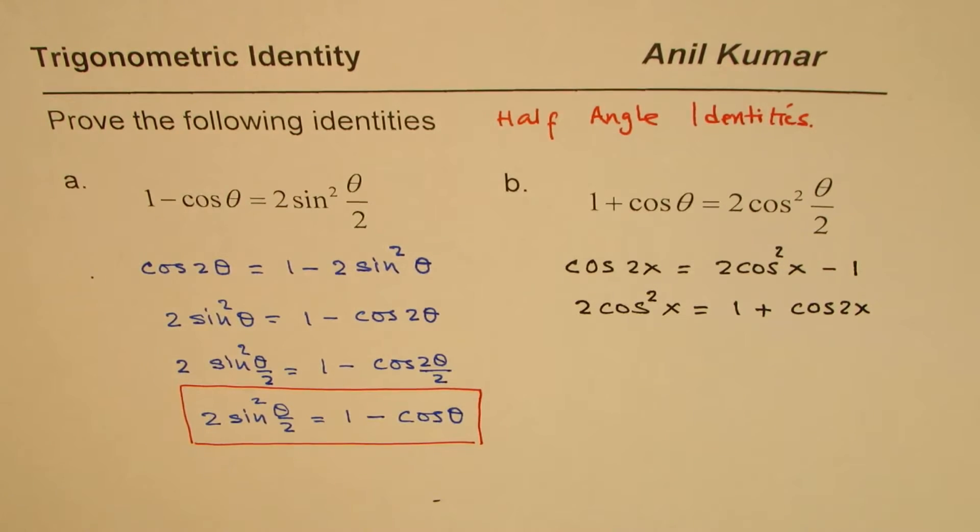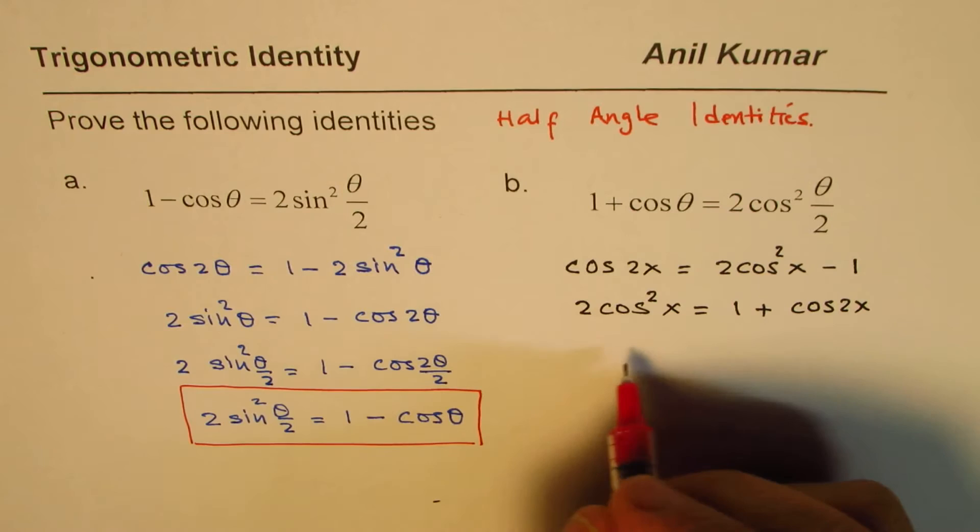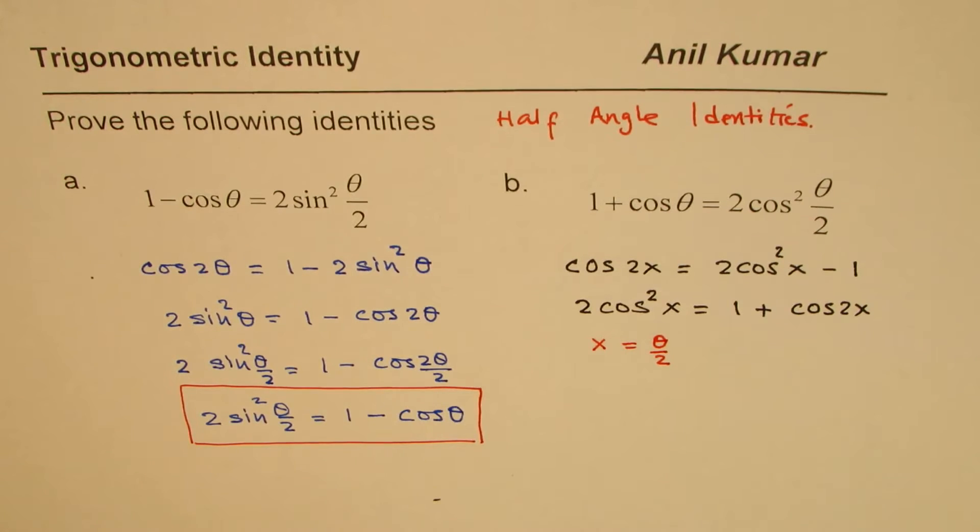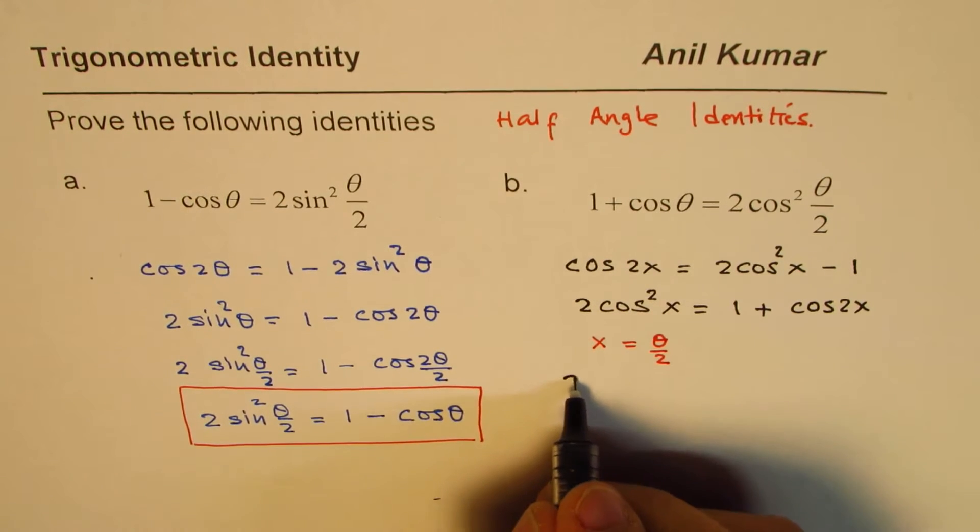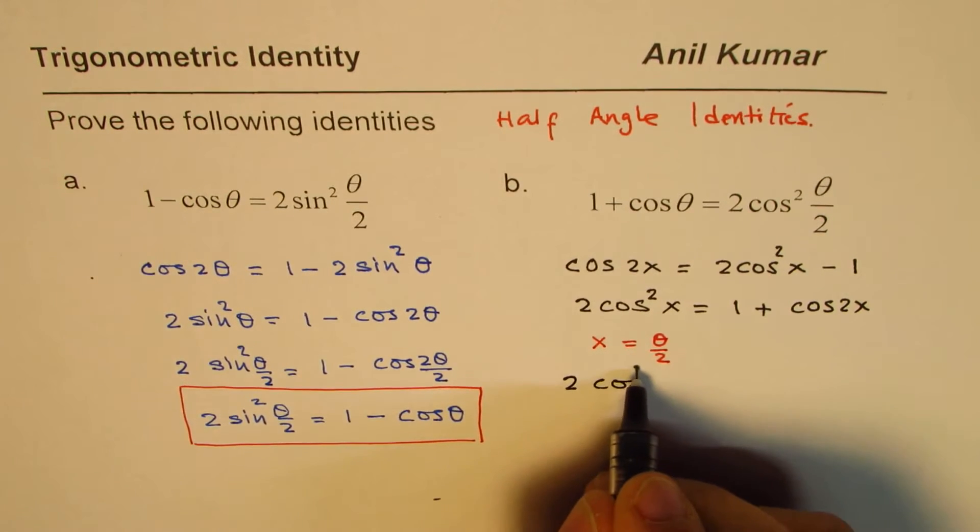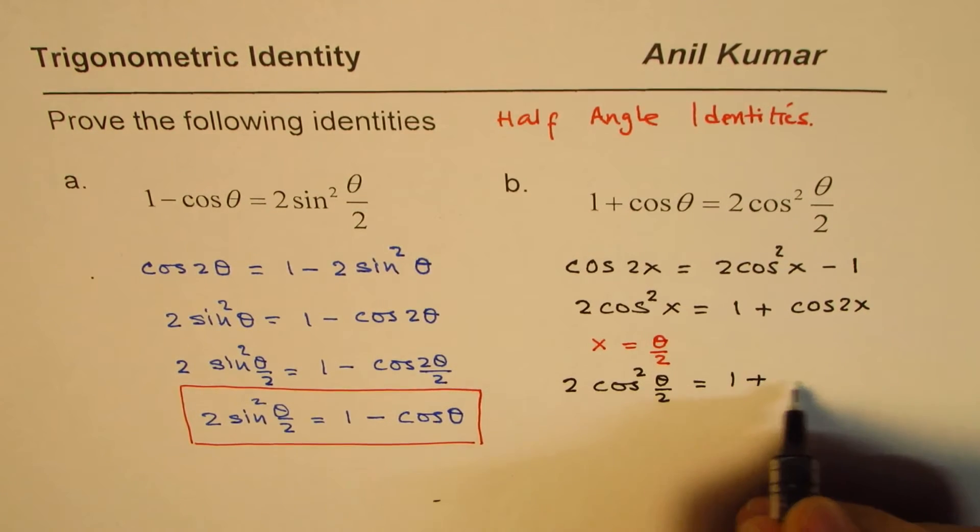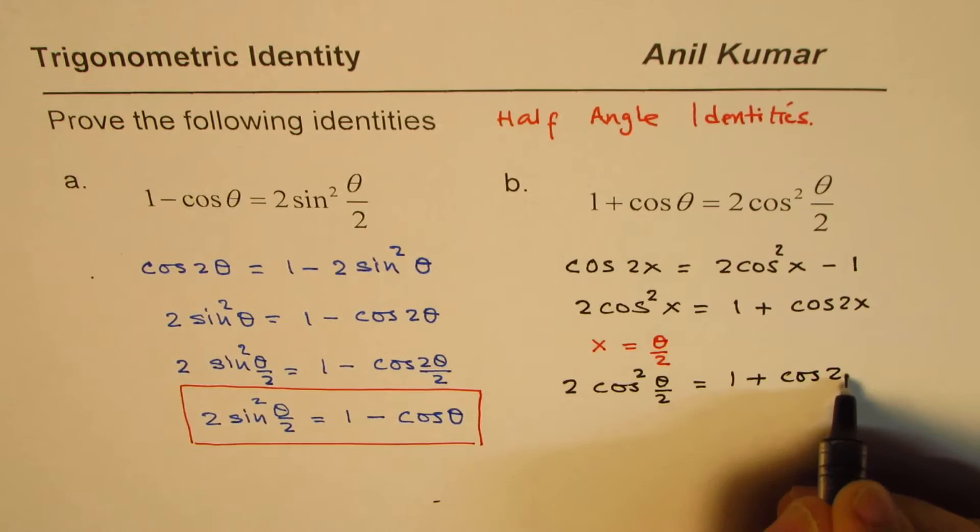Now, if I substitute x equals to theta by 2, then what happens? Then I get 2 cos square theta by 2 equals to 1 plus cos 2 times theta by 2.